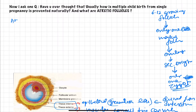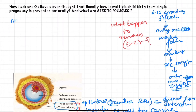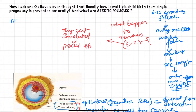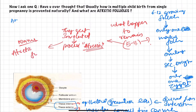The question here is: what happens to the remaining 5 to 11 follicles? The answer is that these 5 to 11 follicles get involuted by the process known as atresia, and so they are given the name atretic follicles.